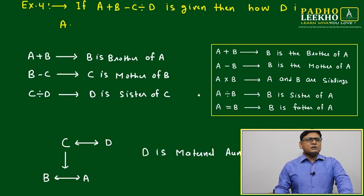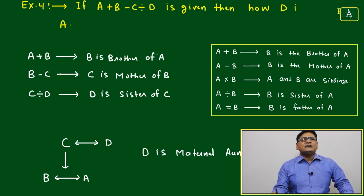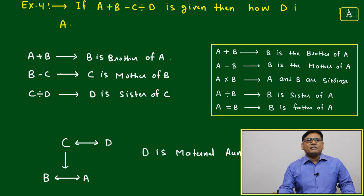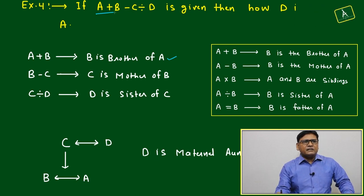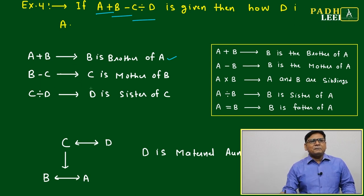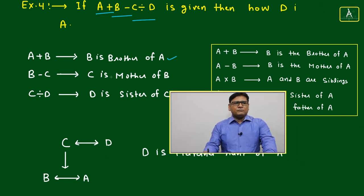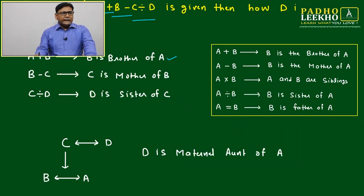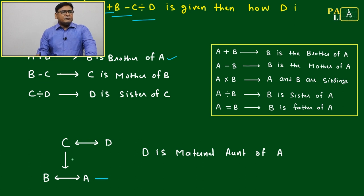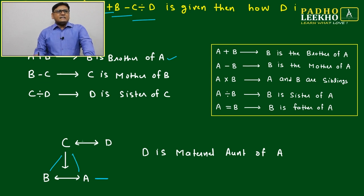Question number 4: A plus B minus C divided by D — how is D related to A? Breaking it down: A plus B means B is the brother of A; B minus C means C is the mother of B; C divided by D means D is the sister of C. In the family diagram, C is the mother of B, and since B is the brother of A, C is also the mother of A. D is the sister of C.